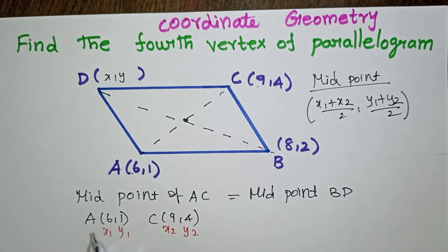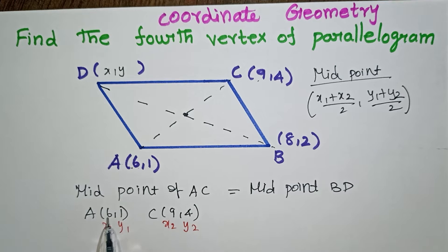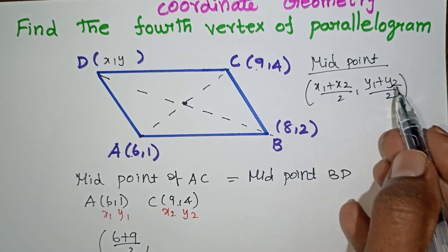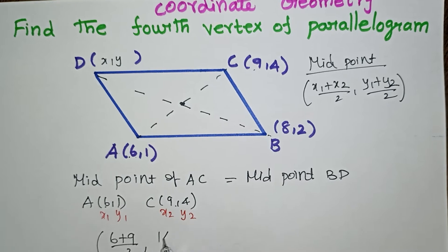Applying the midpoint formula: X1 plus X2 by 2 equals 6 plus 9 by 2, and Y1 plus Y2 by 2 equals 1 plus 4 by 2.